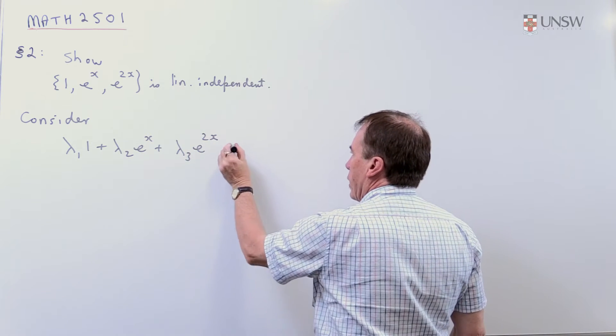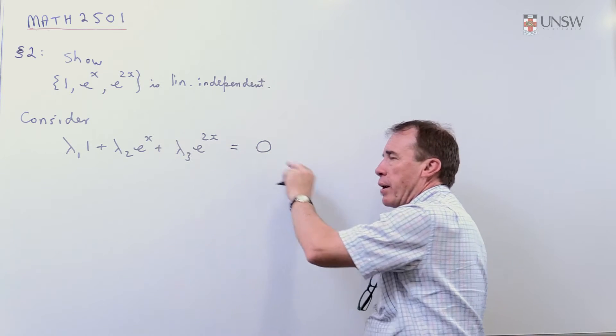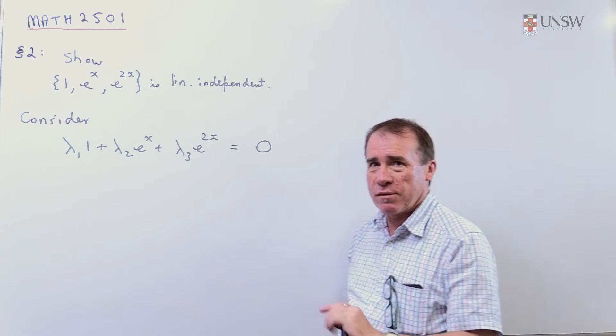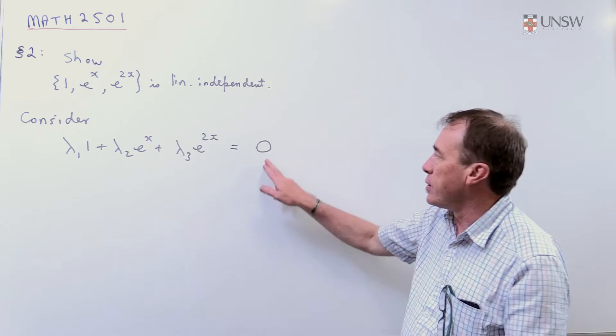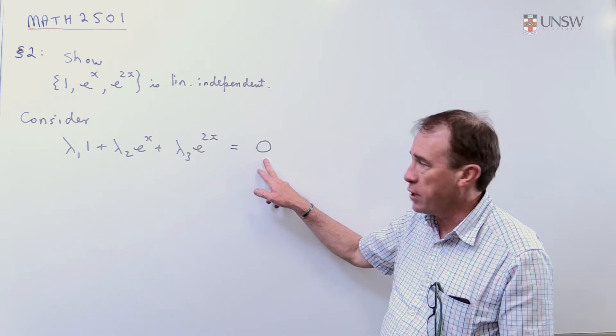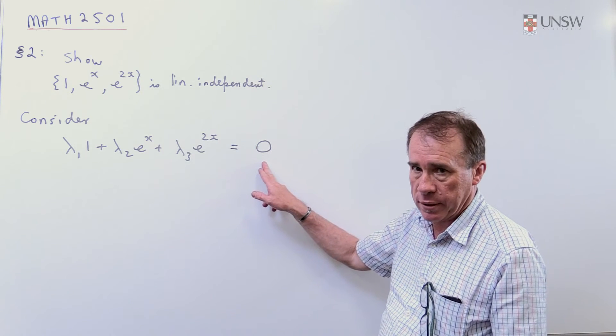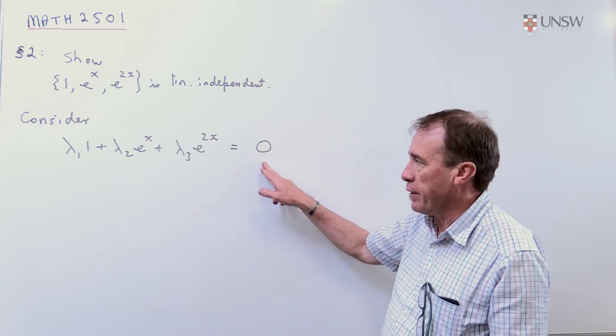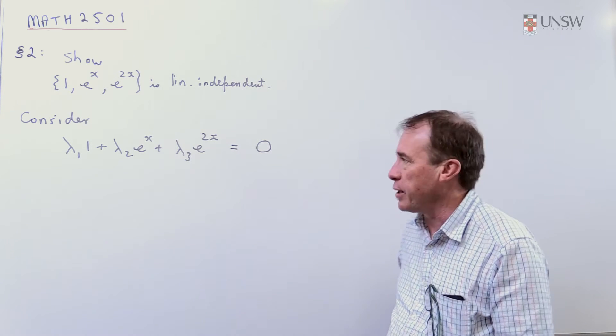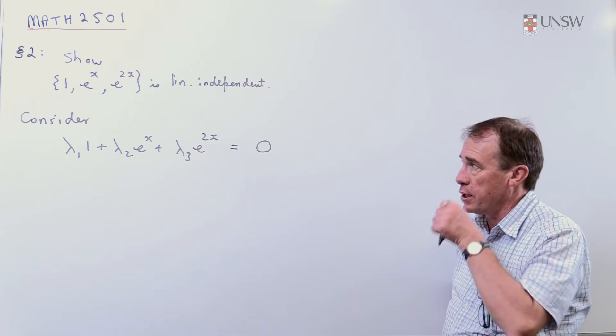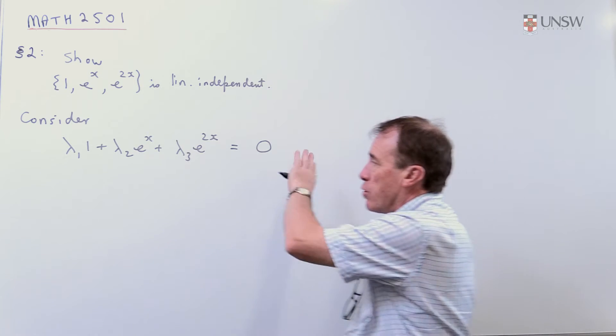And I'm going to try and put that equal to zero. Again, you've got to think about what is the incarnation of zero in the setting. This is now the zero function, this is the function that is zero for all x. You can think of it graphically as the x-axis if you will, but it's the function, not the number zero. So this has to be true for all x.